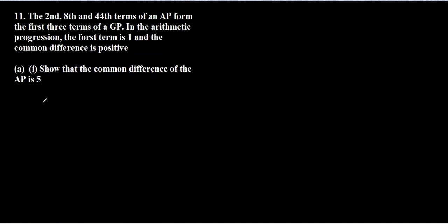In question 11, they're talking about two sequences, one is AP and one is GP. They're saying that the second term of this AP is the first term of GP, the eighth term is the second term of GP, and the 44th term of AP is the third term of GP.